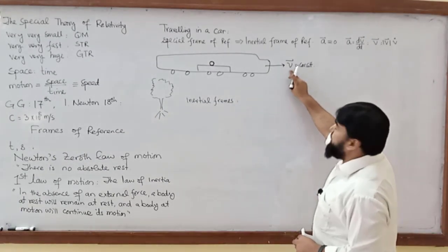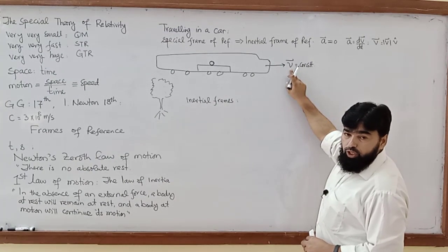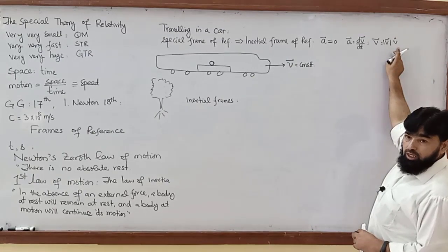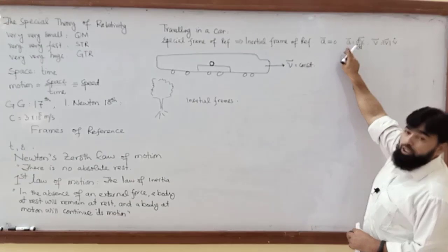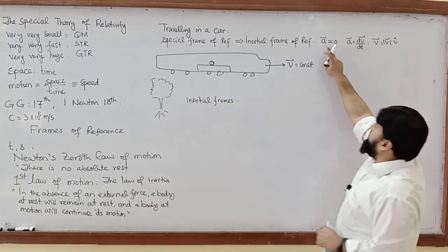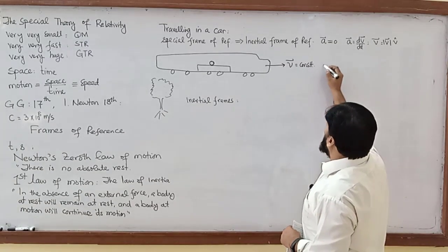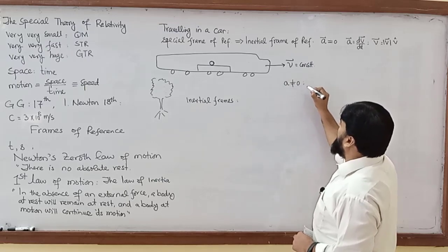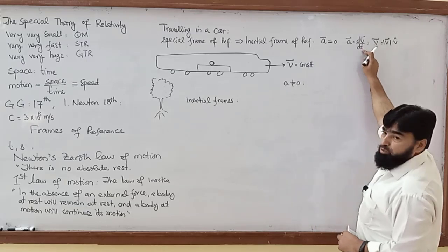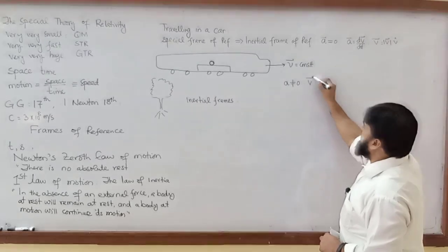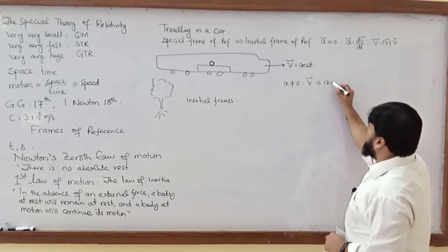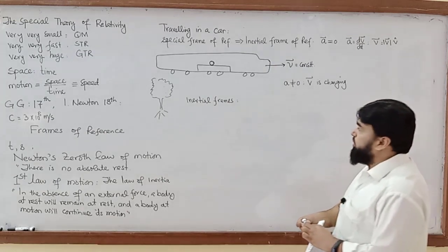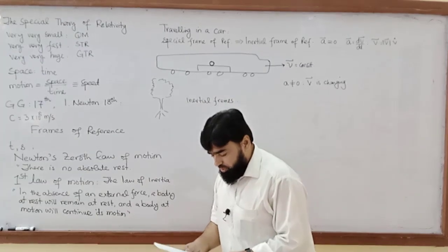Now, let's say we change the velocity. If V changes — either the speed or the direction of the car — in both situations acceleration will be produced, and A will become non-zero. When A is non-zero, it means V is now changing with respect to time.